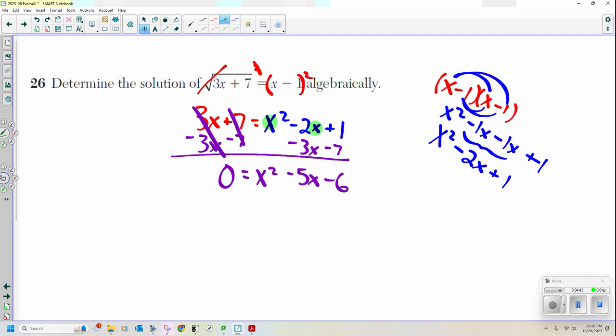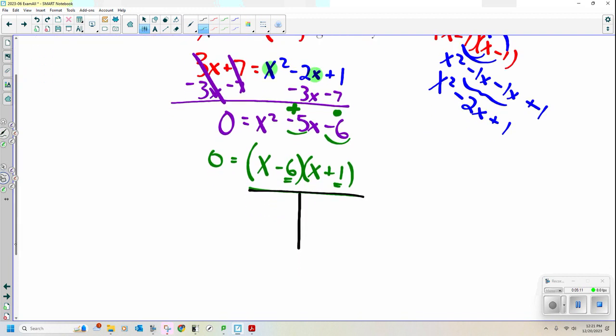Two numbers that multiply to be negative 6 that add or combine to be negative 5. It's x minus 6 and x plus 1. Negative 6 and positive 1. If I multiply them, it's negative 6. And if I just combine them, it's negative 5. We're good. I take x minus 6, set it equal to 0, and solve. I add 6 to both sides. And x equals 6. Same thing. x plus 1 equals 0. Subtract 1 from both sides. And x equals negative 1.